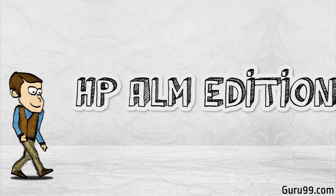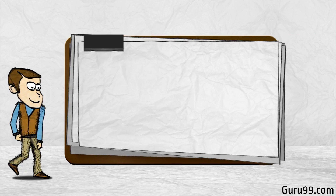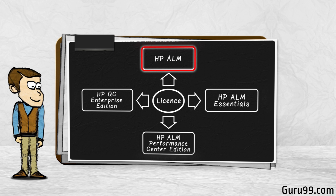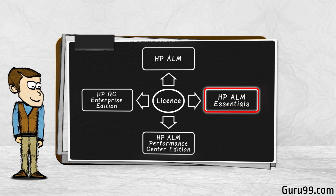HP ALM is a commercial license tool, and HP distributes ALM in four different flavors. Each license allows users to access certain ALM functions. HP ALM is a best fit for organizations that need complete access to all modules to support the entire development and test lifecycle. HP ALM Essentials is for corporations that need just the basic features for supporting their entire software lifecycle — it has access to requirements management, test management, and defect management.